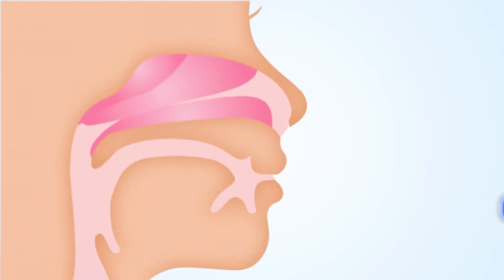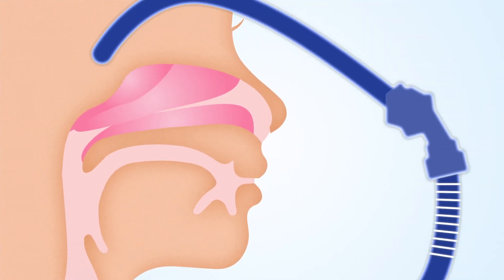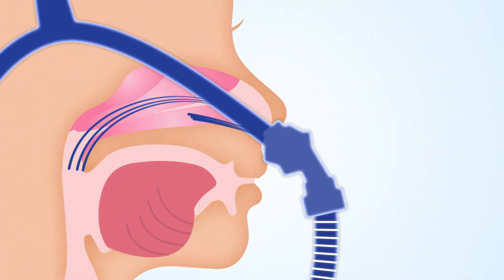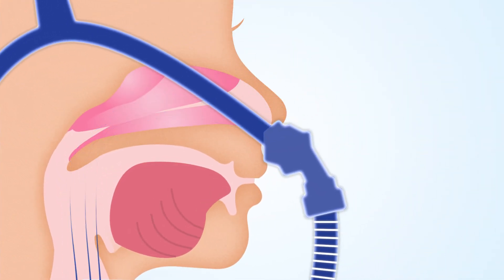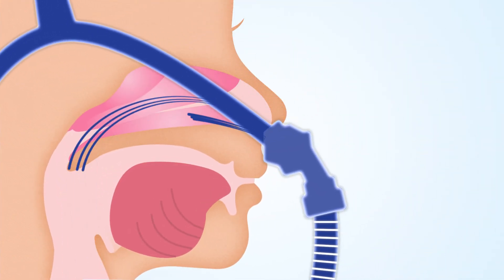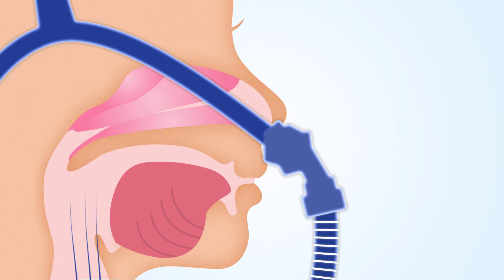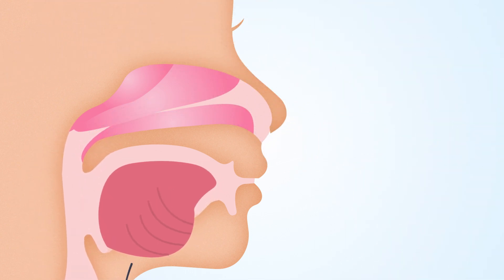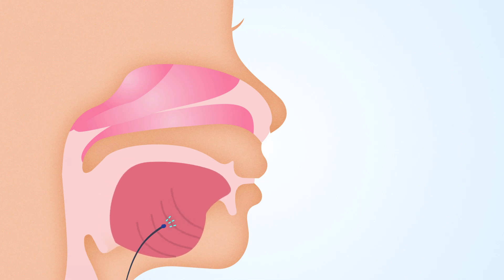Alternatively, a nasal pillow CPAP can be used to push the tongue forward to reduce snoring and sleep apnea. If you're looking for an option without the need for nightly equipment, a nerve stimulator can be implanted to move the tongue forward and open the airway while sleeping.